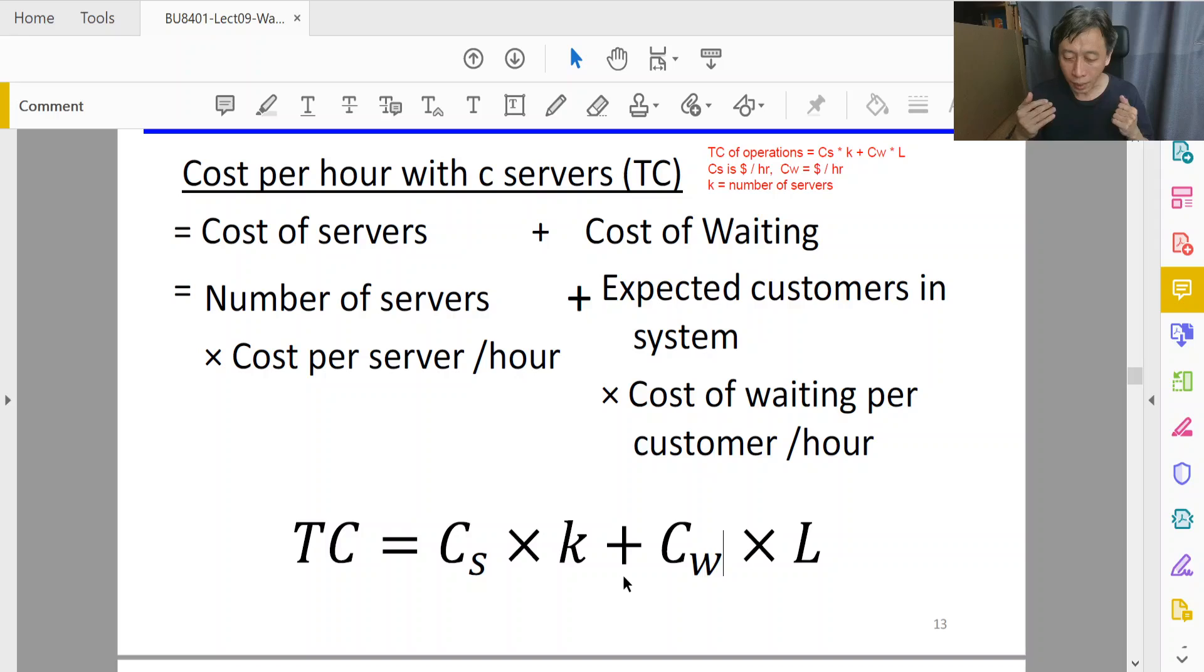And so therefore, if we have more customers stuck in the service area with many servers, that is also going to hit back at us, the bank or the queue system owner. And because of that, we do not want a small Lq. We do not want a k that will get us to a small Lq but having an overall large L, because there are many customers stuck in the servers. So let's use L therefore, as the argument goes. So that's why our TC should be based on Cw times L.